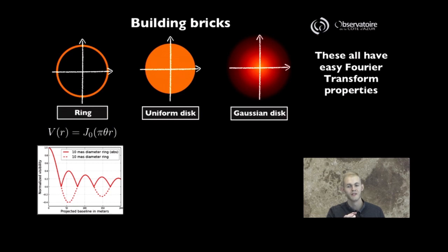In the case of the ring, for instance, the visibility curve as a function of separation in the UV space follows a function known as the first-order Bessel function of order zero. This is a function that features some modulation of the amplitude that eventually goes down but rings quite a bit as you go toward longer baselines.